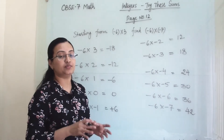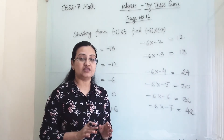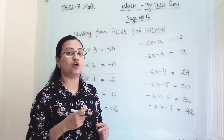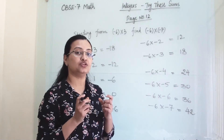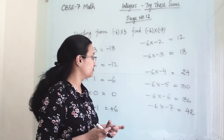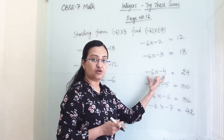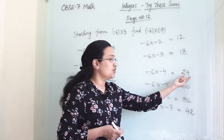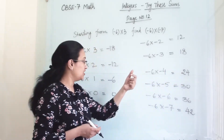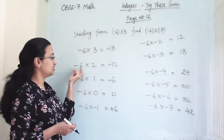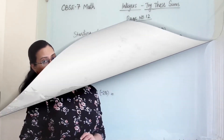In multiplication, the main thing is how many times the negative sign appears in your sum. If it comes an even number of times, your answer will be positive. If it comes an odd number of times, your answer will be negative.